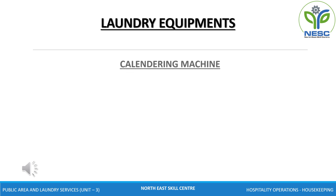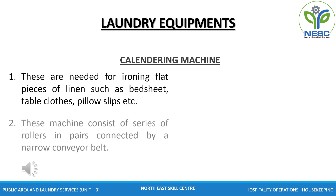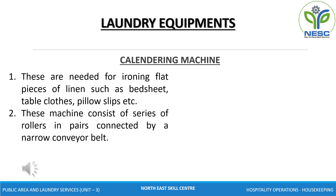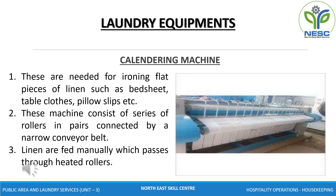Clothes requiring a pressed finish are subjected to various types of finishing equipments depending on the size and shape of the linen. One of the finishing equipments is the calendaring machine. These are needed for ironing flat pieces of linen such as bedsheets, tablecloths, blankets, serviettes, etc. This machine consists of a series of rollers in pairs connected by a narrow conveyor belt. The speed of the roller is adjusted. The bedsheets or other flat articles are fed manually; the linen passes through heated rollers and thereby becomes ironed. After pressing, the sheets can be automatically folded or can be done manually.